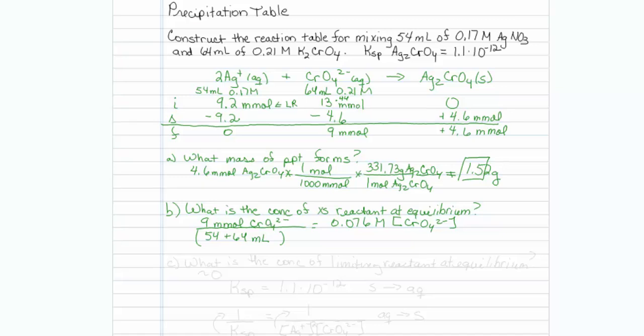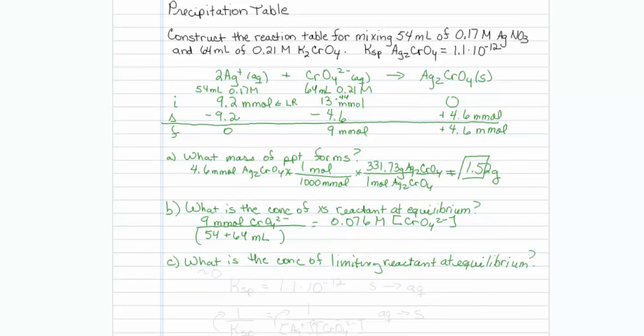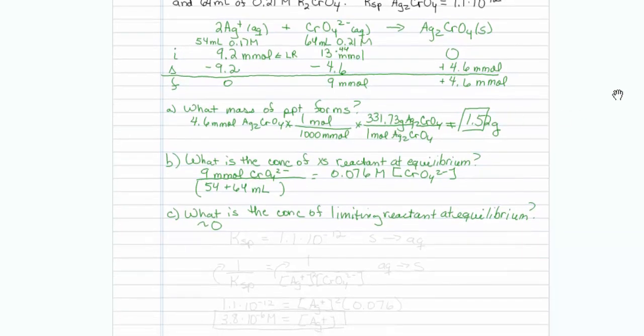The last question asks, what is the concentration of limiting reactant at equilibrium? Well, we know it's approximately 0, but there is actually a real value associated with it. The way to determine the actual real value associated with it is to realize that Ksp of this reaction is equal to 1.1 times 10 to the minus 12. Well, that was for when we went from solid to aqueous. So for our reaction right here, really, the equilibrium constant should be 1 over Ksp when we are going from aqueous to solid, and that should be equal to 1 over my silver ion concentration squared times my chromate concentration.